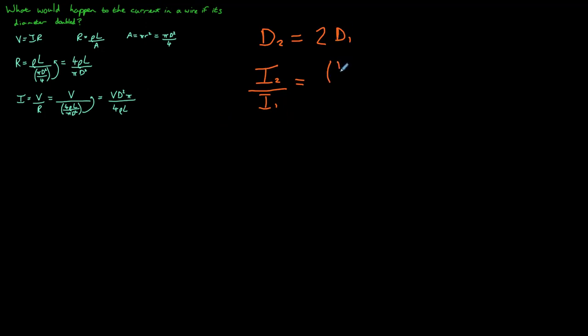So let's begin by having V d2 squared, so the diameter of wire 2, multiplied by pi, divided by 4 rho L, all divided by the same thing again but this time V d1 squared pi divided by 4 rho L.